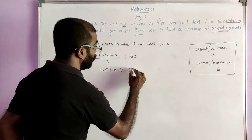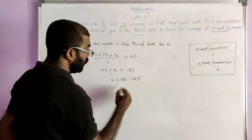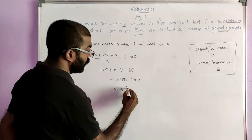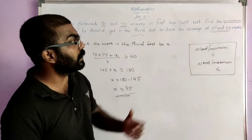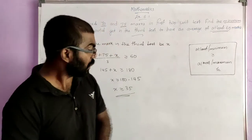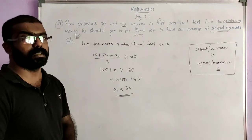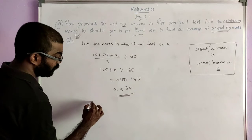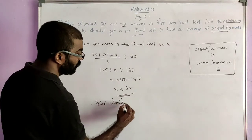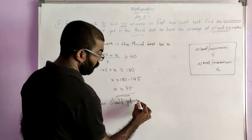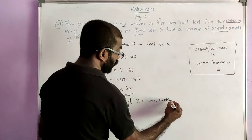60 into 3 is 180. X is greater than or equal to 180 minus 145. X is greater than or equal to 35. So what we can conclude is: in order to attain an average of at least 60 marks, he should get greater than or equal to 35 marks in the third test. Therefore, Revi should get 35 or more marks in the third test.